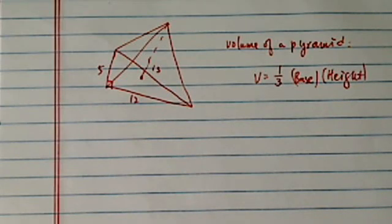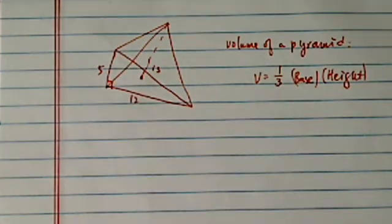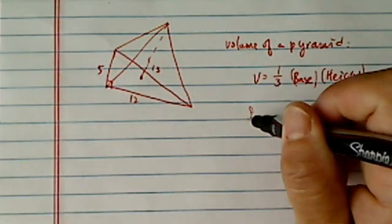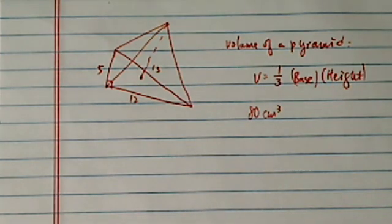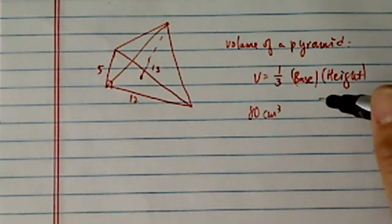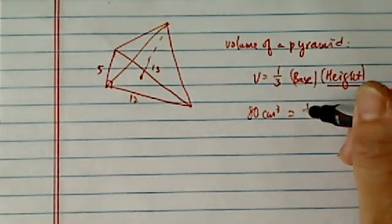Hey there, thank you for watching this clip on finding volume of a pyramid. We're given a pyramid with dimensions as shown and volume was 80 centimeters cubed. So in order to do this one, what we need to do is use the formula and then go on finding what's the height. We were asking for height.